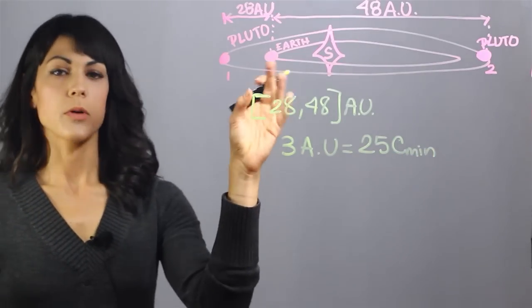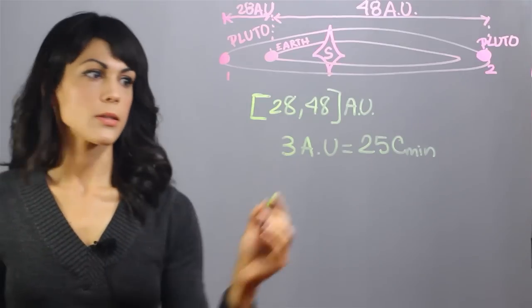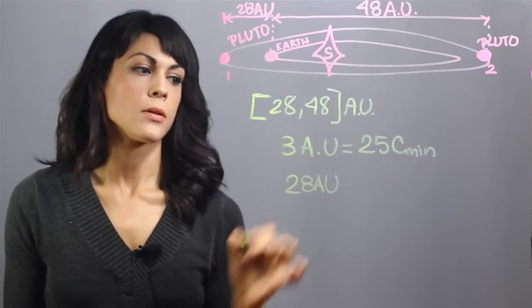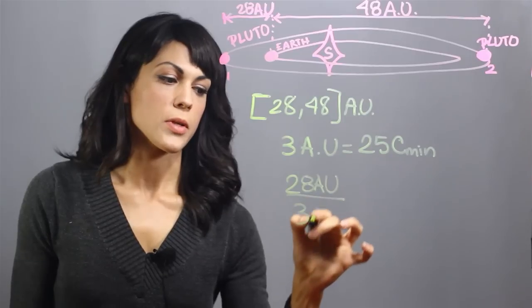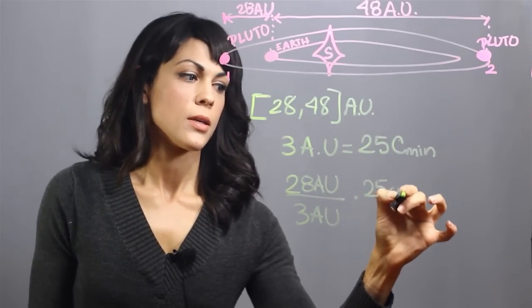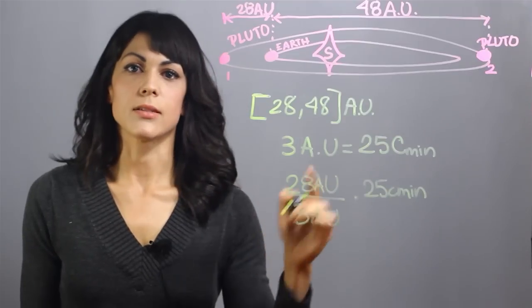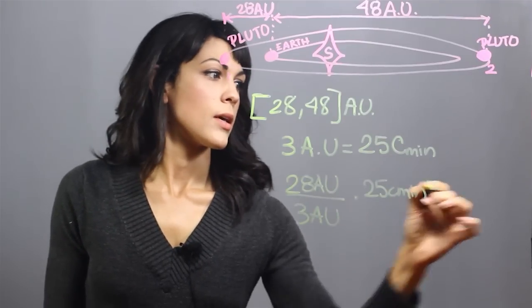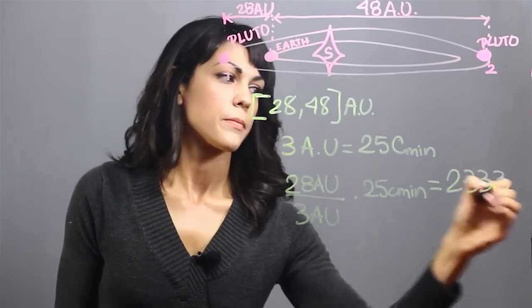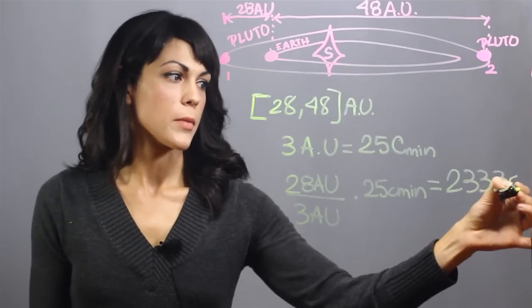So now, how do we transform 28 to 48 into light minutes? If we have 28 astronomical units, we divide it by 3 astronomical units and multiply it by 25 light minutes. That equals 233.3 light minutes.